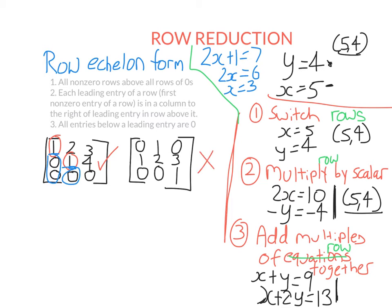The second matrix is not in row echelon form. There are no zero rows, so the first condition doesn't apply. But the leading entry in row two is actually to the left of the column of the leading entry in row one, so condition two is not satisfied. Also condition three isn't satisfied because there is an entry below a leading entry that isn't zero. We could actually make this matrix into row echelon form simply by swapping the first and second rows.